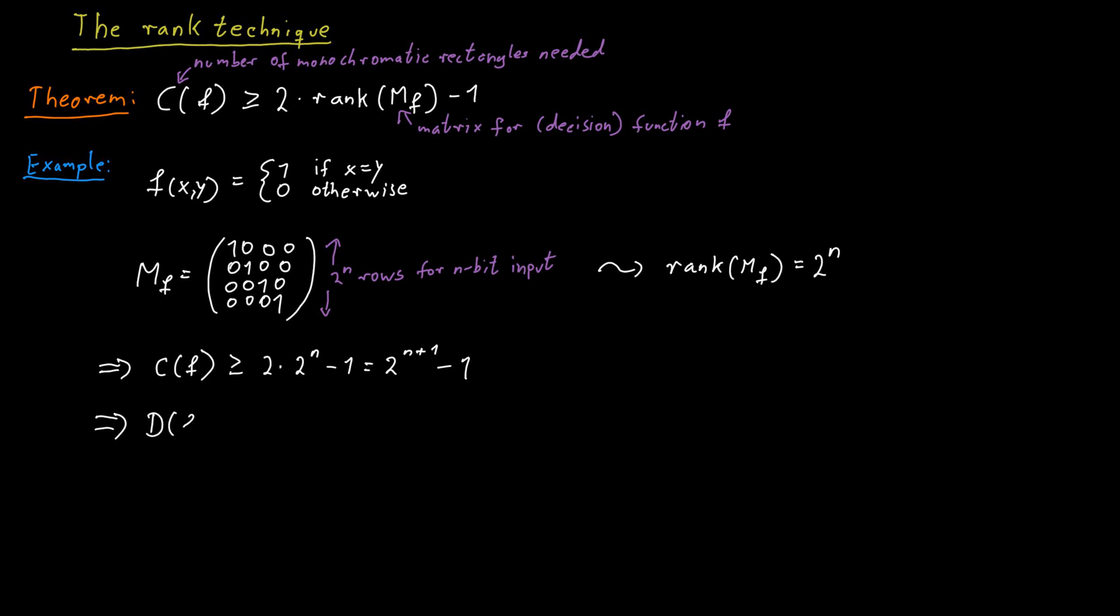And we know that the communication complexity of a function is the log of C of F. So we know that the communication complexity of this particular function, the equality function, has to be the log of 2 to the n plus 1 minus 1, which is n plus 1 if we also take into account the fact that the communication complexity needs to be an integer number.